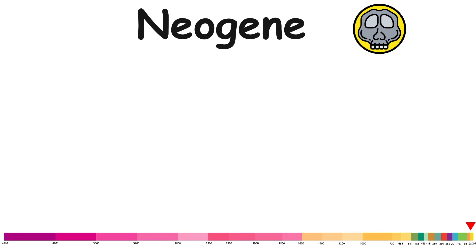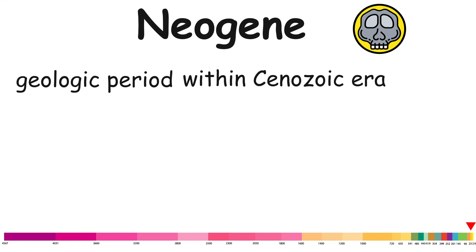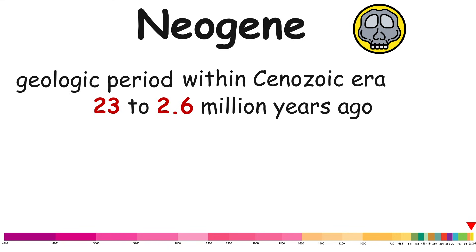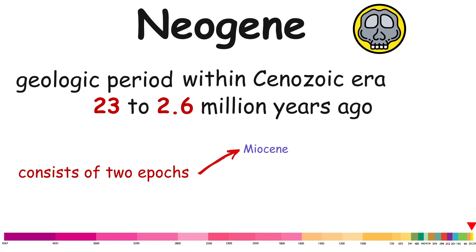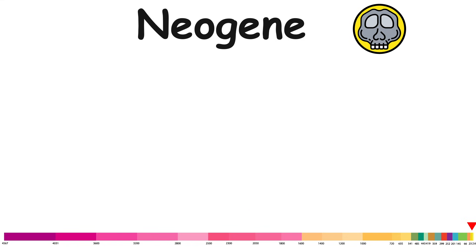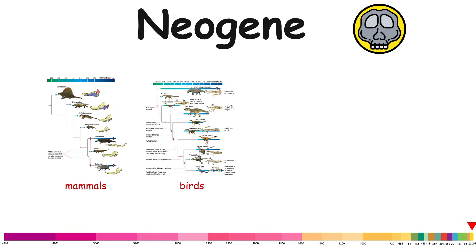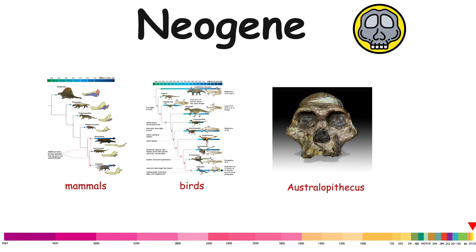Neogene. The Neogene is a geologic period within the Cenozoic era, spanning approximately from 23 to 2.6 million years ago. It consists of two epochs: the Miocene and the Pliocene. During this period, mammals and birds continued to evolve into modern forms, while other groups of life remained relatively unchanged. Australopithecus, common in East Africa, appeared.